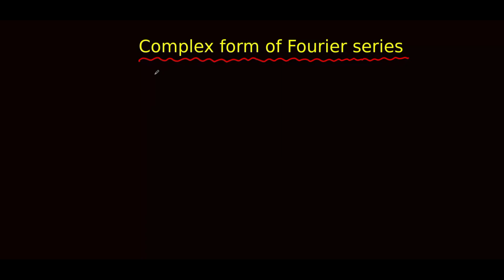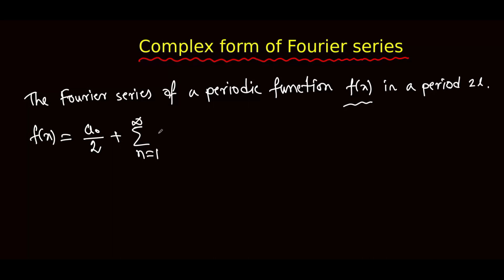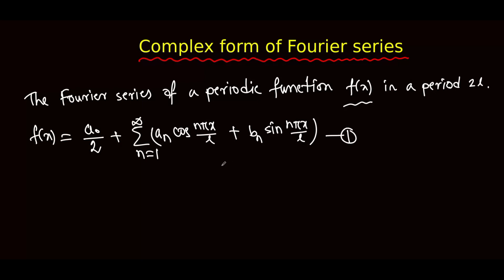This is the complex form of Fourier series. Let us consider the Fourier series of a periodic function f of x in a period 2l. The Fourier series is given by: f of x is equal to a0 by 2 plus summation over n equal to 1 to infinity, an cos n pi x by l plus bn sin n pi x by l. This is the Fourier series with cos and sin terms.